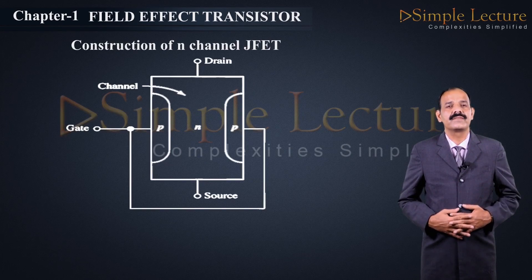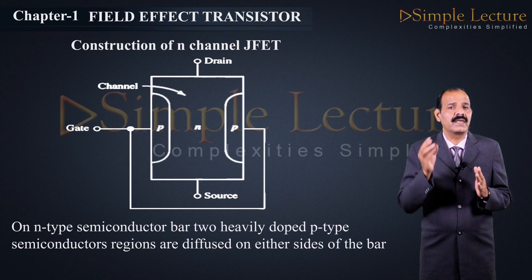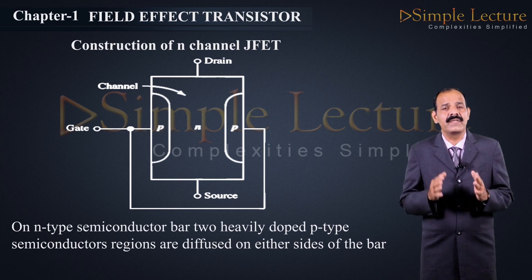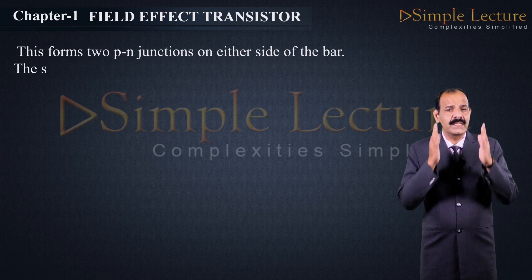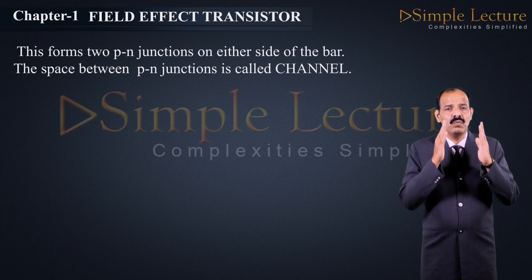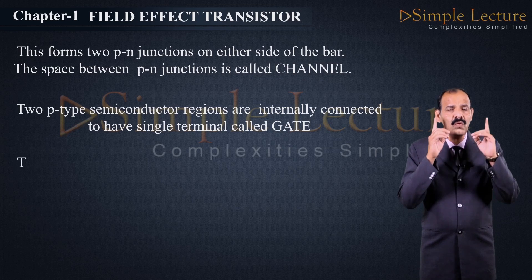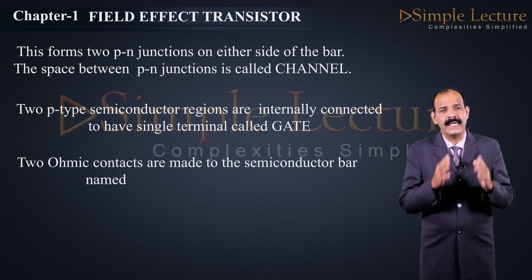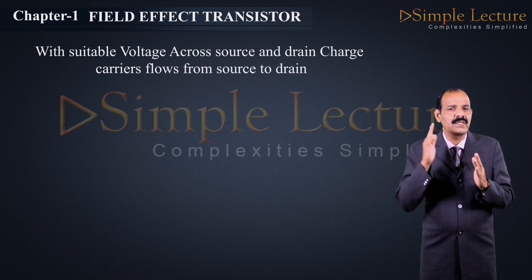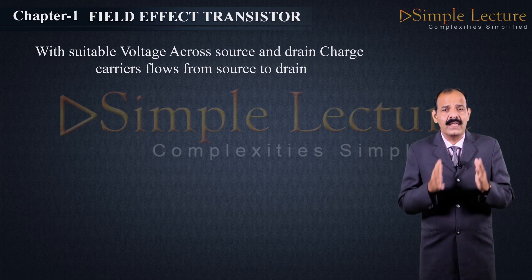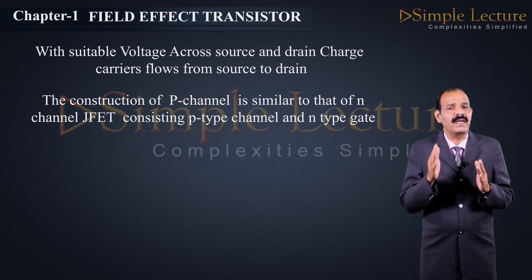Construction of N-channel JFET: On an N-type semiconductor bar, two heavily doped P-type semiconductor regions are diffused on either side of the N-type bar. This forms two P-N junctions on either side of the bar, and the space between the P-N junctions is called the channel. The two P-type regions are internally connected to form a single terminal called the gate. Two ohmic contacts are made to the semiconductor bar named as drain and source. With suitable voltage across source and drain, charge carriers flow from source to drain. The construction of P-channel JFET is very similar to N-channel JFET, but uses a P-type channel and N-type gate.